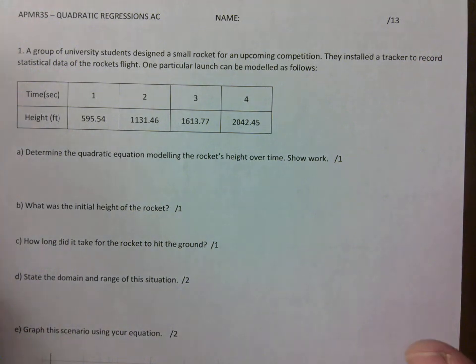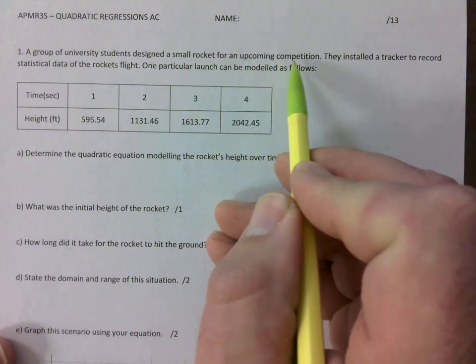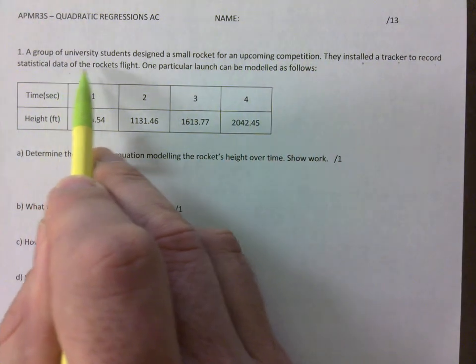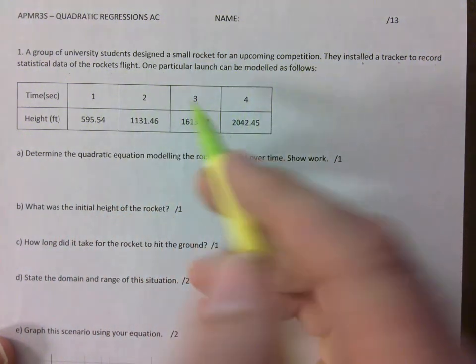Okay, here we go. A group of university students designed a small rocket for an upcoming competition. They installed a tracker to record the statistical data of the rocket's flight. One particular launch can be modeled as follows.